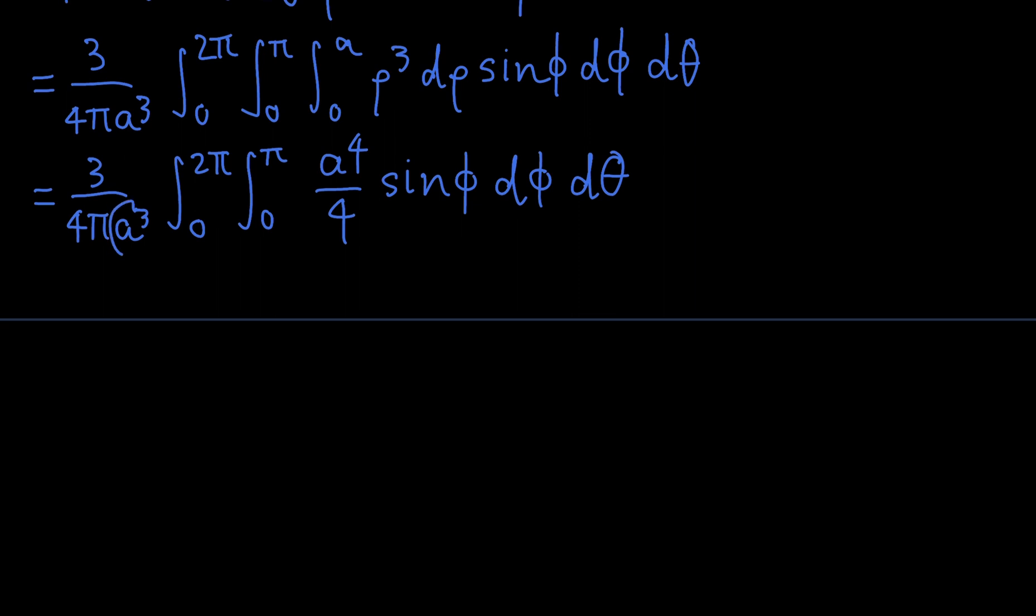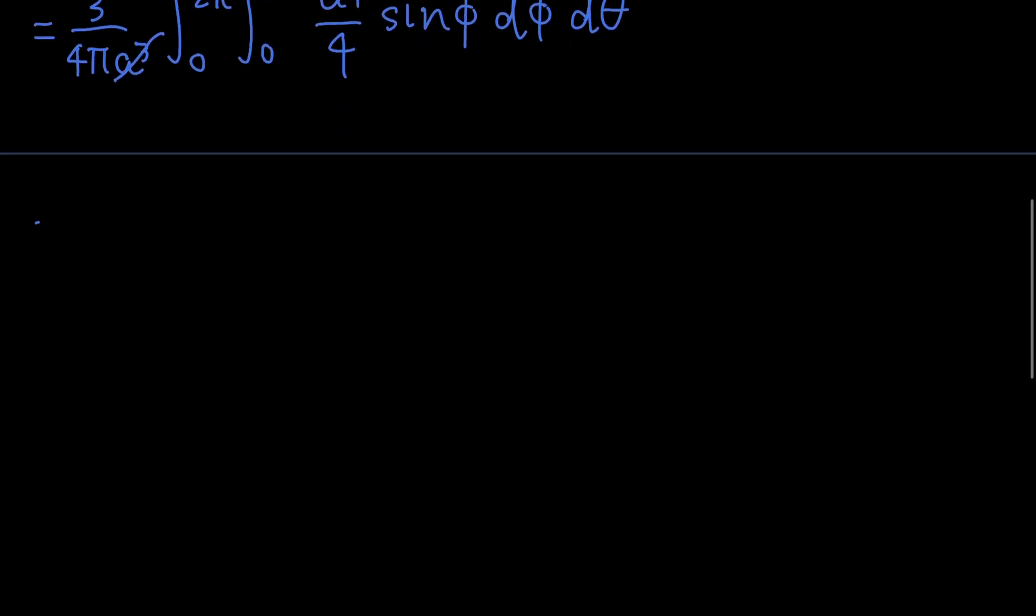Well, notice that this a cubed and this a to the 4th, this cancels the a cubed and cancels this exponent. And therefore, as a is a constant, we can just move a out front, giving us this thing. And of course we can move the 4 out front too, which gives 16 pi in the denominator. And we have all these limits integrand, and we're just left with a sine phi d-phi d-theta. And now we have a double integral.